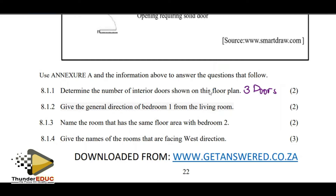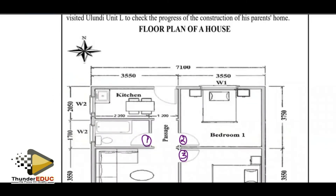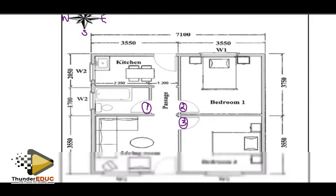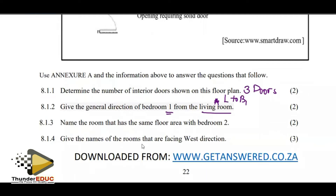We have three doors. Give the general direction of bedroom one from the living room. So you're in the living room going to bedroom one. Using the compass — north, south, east, west — if you're in the living room, where is bedroom one? Bedroom one is in the north-east. Our general direction is north-east.